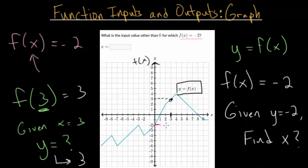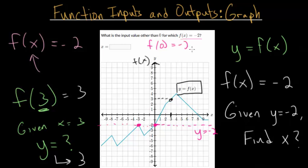Let's find y equals negative 2. I draw a dashed horizontal line all the way across at y equals negative 2. We need to figure out where the blue curve actually crosses that line — and it looks like right there and right there. Since we're looking for the x values which give us a y value of negative 2, it looks like when x is 0 or negative 3, our function value is negative 2. So both f of 0 and f of negative 3 equal minus 2.